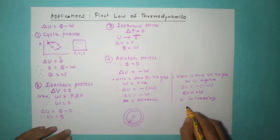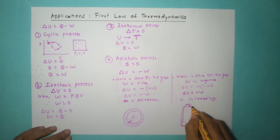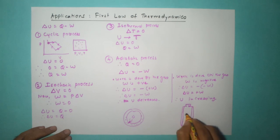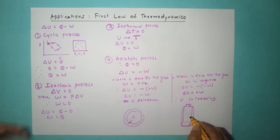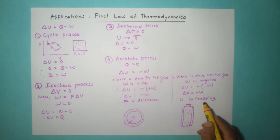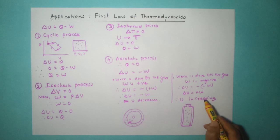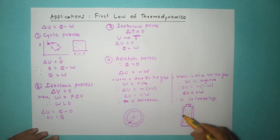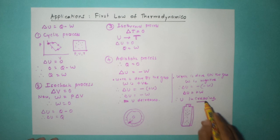For an example of work done on the gas, consider a thermos flask with tea inside, which has good insulation. If you shake the thermos flask, work is being done on the tea. The tea starts swirling around inside, and what is observed is that U increases — the tea becomes hotter. Work is done on the gas, W is negative, and U increases because of the swirling motion and work done against the viscosity between the layers of tea.